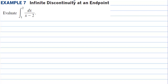Example 7: infinite discontinuity at an endpoint. Evaluate the integral from 1 to 2 of dx over (x minus 2). We have the limit as b approaches 2 from the left, since 2 makes the denominator 0 and we're going from 1 to 2 on the left-hand side. So we take the integral from 1 to b of dx over (x minus 2).